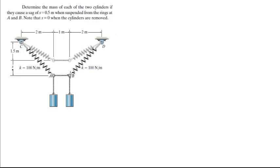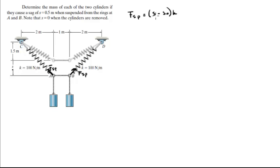The force of the springs — the force of the springs is given by (S minus S0) times K. This is the formula for the force that is developed by springs. S is given on the diagram, and you have to find it.